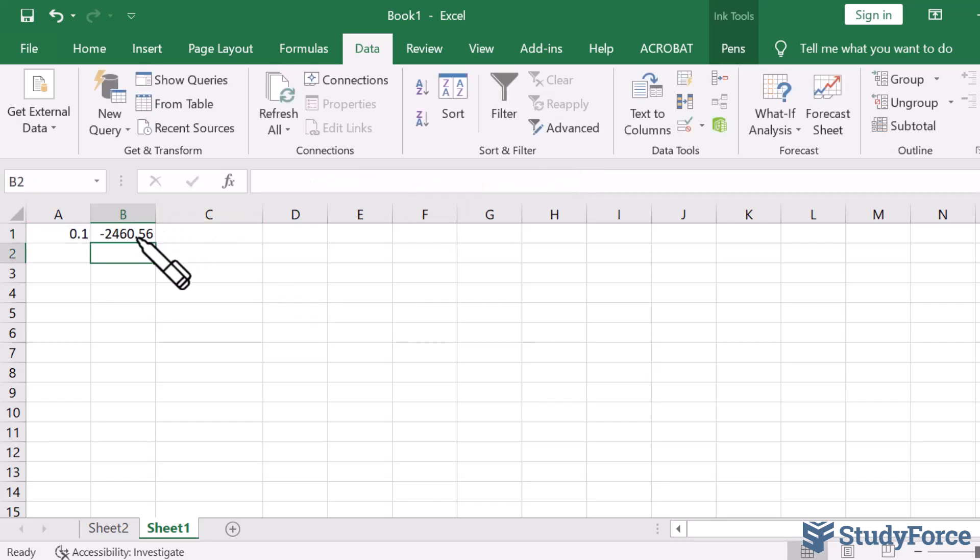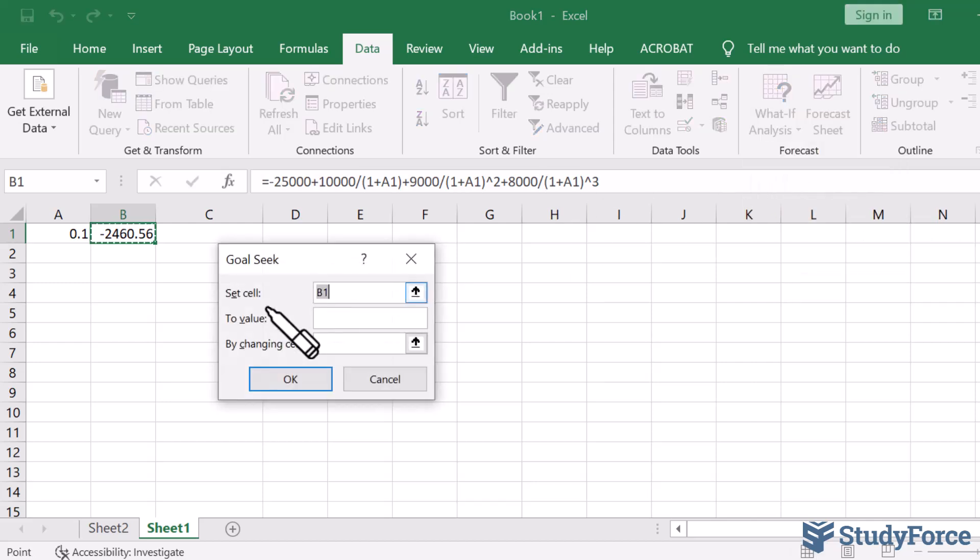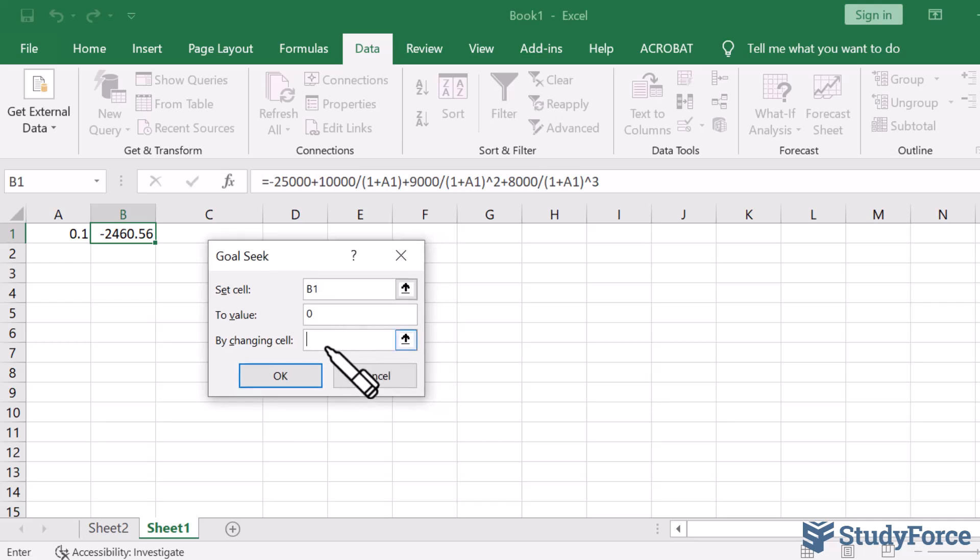Now click that cell, go into data, this table, and click what if analysis. Then click goal seek. Leave everything as it is, and inside this input box, put in what the NPV is equal to. In our case, the NPV is equal to 0. And underneath that, place in where your guess was. Your guess was in A1. Now watch what happens.